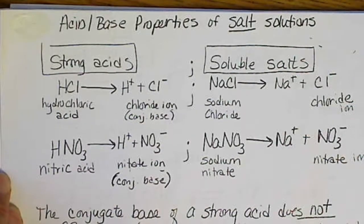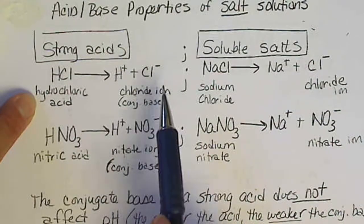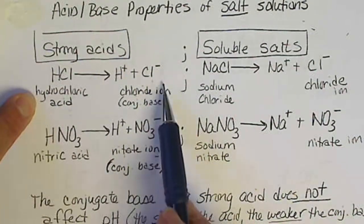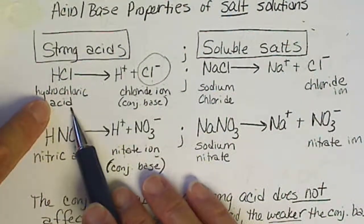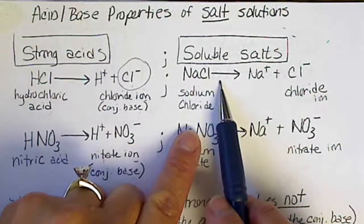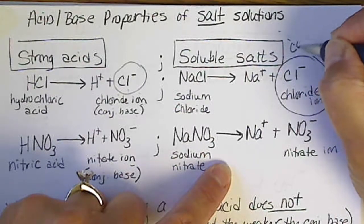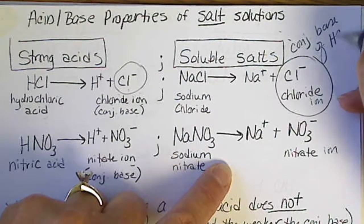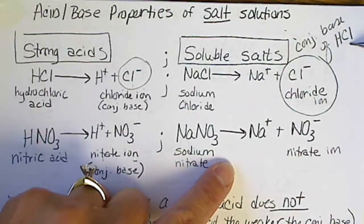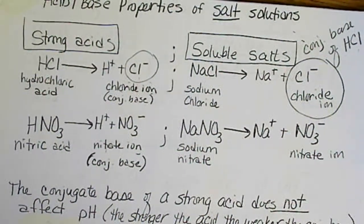The handout lists a few strong acids. Hydrochloric acid dissociates to leave behind the chloride ion, so the chloride ion is the conjugate base of hydrochloric acid. If we have sodium chloride, we still have the chloride ion — it is still the conjugate base of hydrochloric acid. The conjugate base does not have to come from the dissociation of an acid. Remember: a conjugate acid-base pair differs by one H⁺.